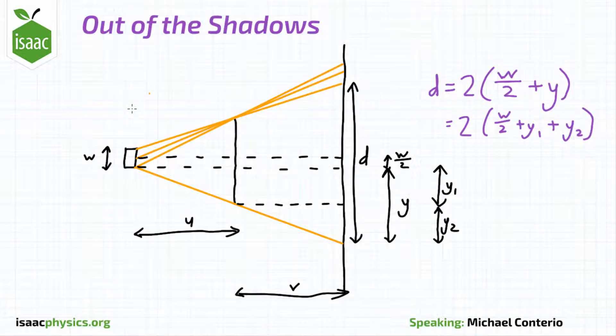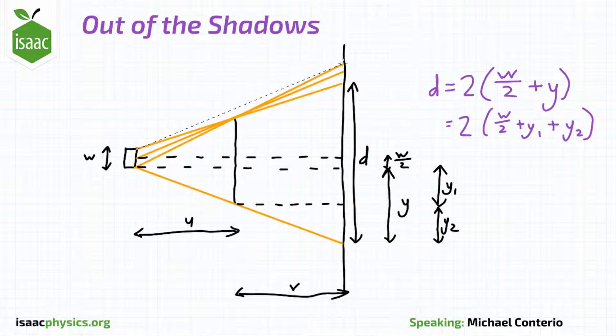The edge of the shadow is the first point that light from the far side of the lamp can reach, passing just by the edge of the opaque object, as light from all parts of the lamp can reach this point as shown here.